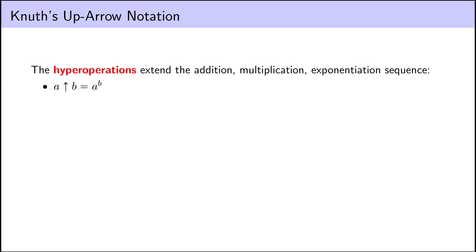First, we define a up arrow b as a to the b. Then we define a double arrow b as b copies of a arrowed together, giving us a power tower, also sometimes called tetration.